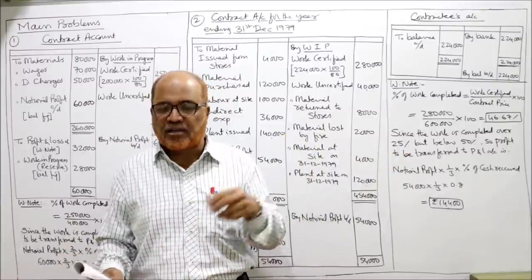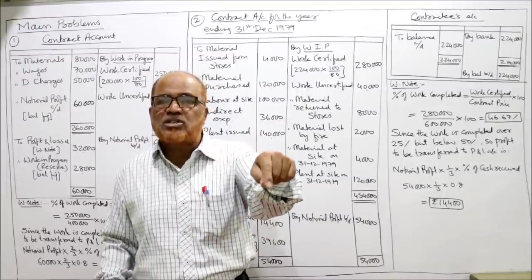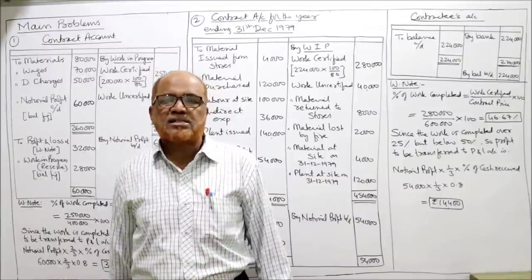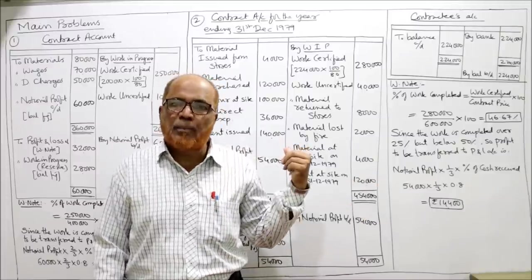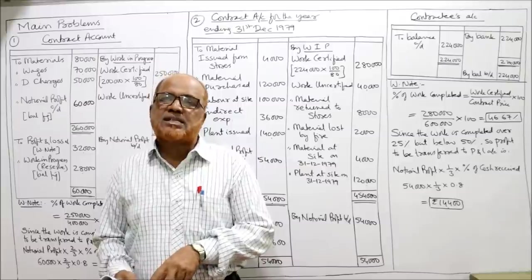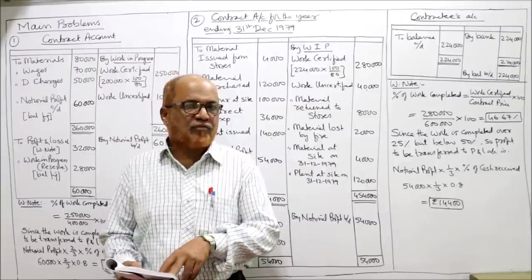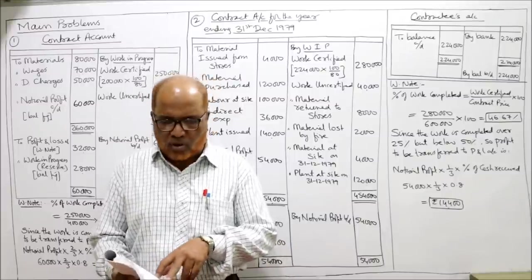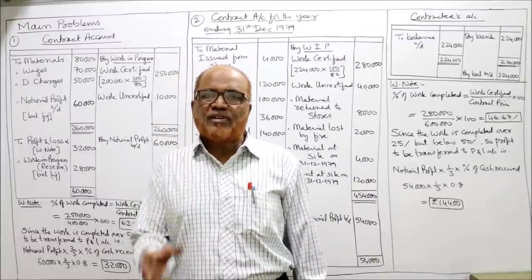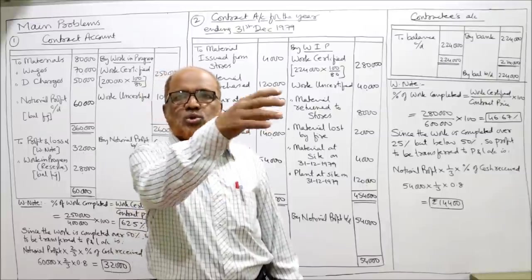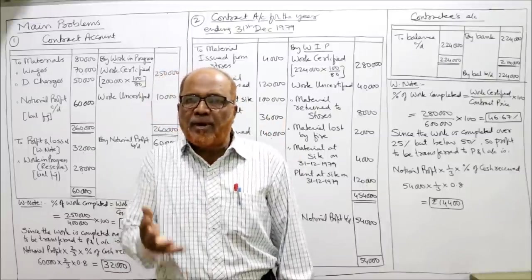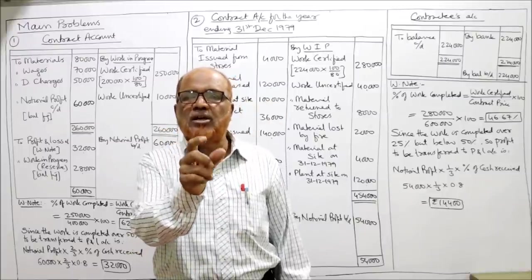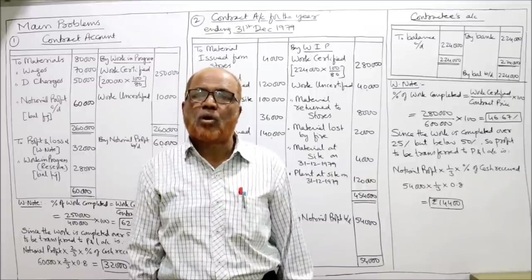Labor at site means wages paid at the site — debit side of contract account. Indirect expenses — debit side. Plant issued — debit side. Material returned to stores: material is first issued from stores to site, and if material is unconsumed or unused, it is returned back to stores. Material returned to stores is taken on the credit side of the contract account.